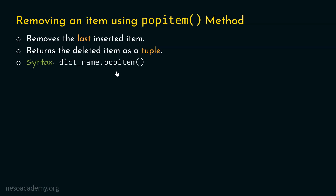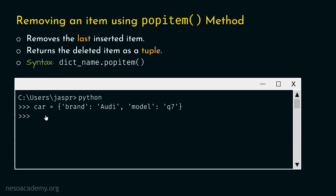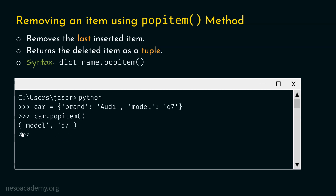Let's see this in action. We will open our command prompt and consider the same car example. We will delete the 'model': 'Q7' key-value pair using popitem, since it is the last inserted item. We type car.popitem() and hit enter. We get that key-value pair returned within round brackets — this is a tuple. Let's type 'car' and hit enter to verify. We are getting the dictionary with one key-value pair, 'brand': 'Audi'. The 'model': 'Q7' pair has been deleted.